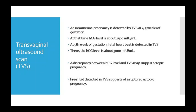Transvaginal ultrasound scan (TVS) mein: jab hCG level 1500 units per mL ho toh TVS se ectopic pregnancy detect ho sakti hai. 5th week mein fetal heartbeat bhi detect ho sakta hai TVS se. Jab hCG ka level 3000 units per mL ho toh findings aur bhi clear dikhti hain.